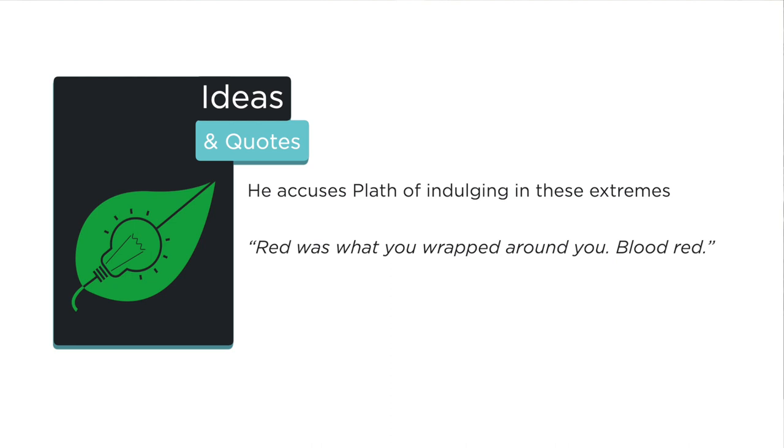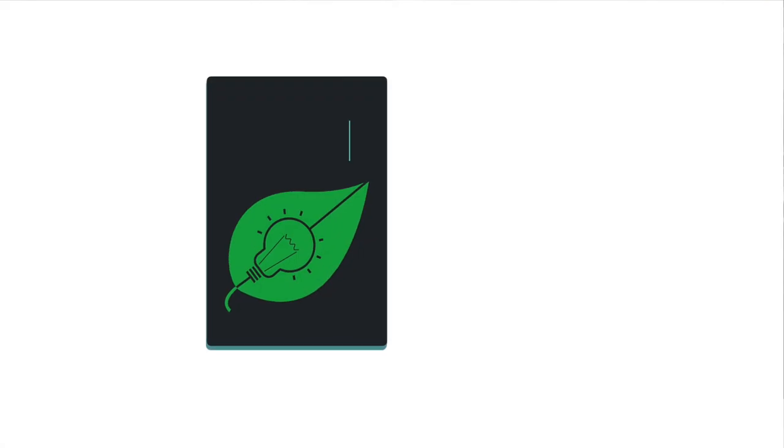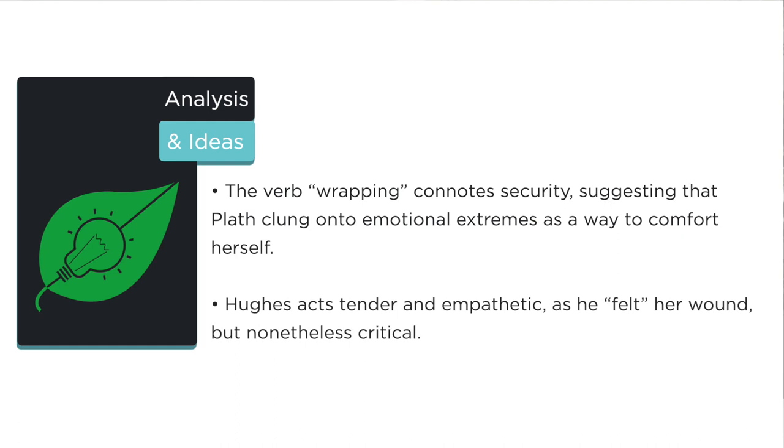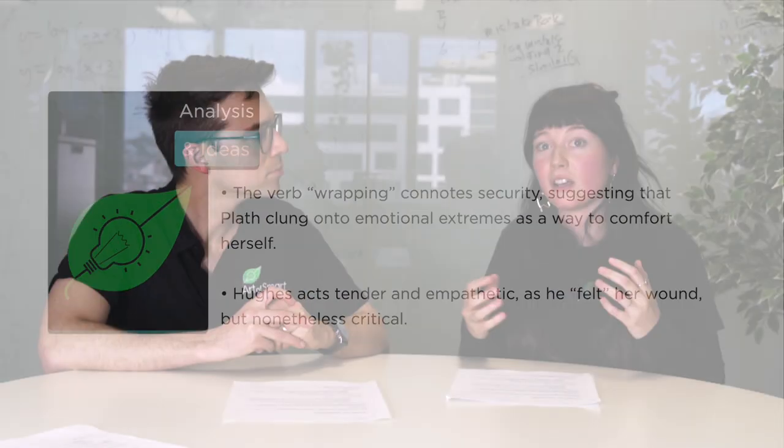Example number two — building on our idea: 'Red was what you wrapped around you, blood red.' We see the ongoing motif of red. What's really interesting is 'blood red' — that's a negative image. But 'wrapped around you' is often quite a comforting image, like wrapping something around you for protection or safety. He's actually accusing Plath of wrapping herself in her violence and anger and finding comfort in those things — which is a weird thing to do, and points to the idea that he sees her as having serious mental health challenges.